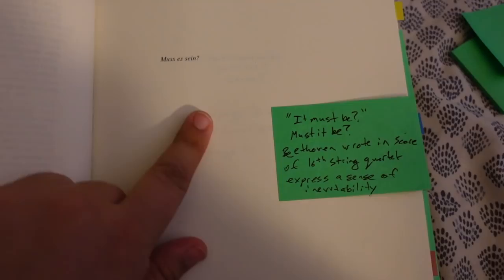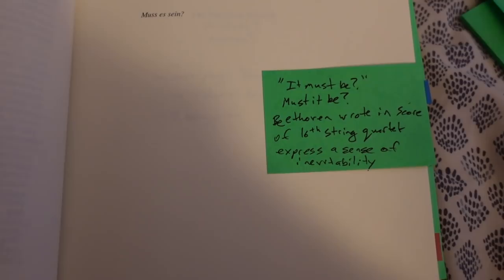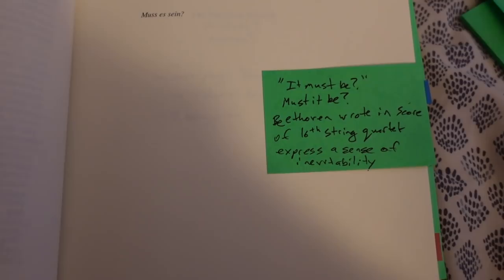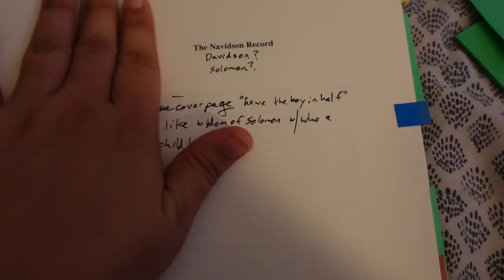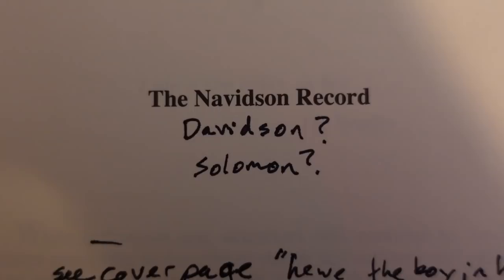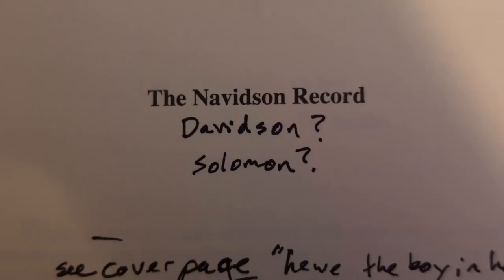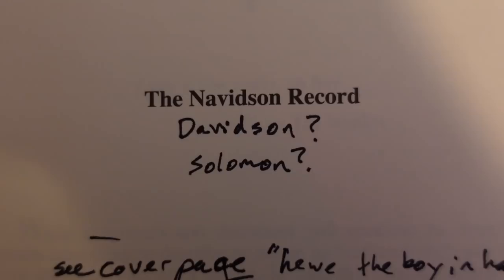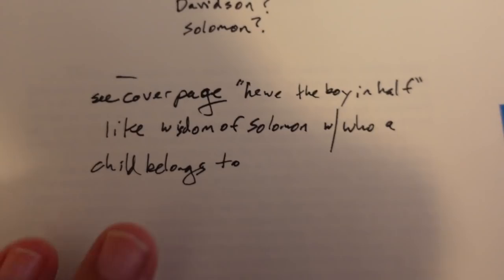There's this phrase I've been googling — technically it's 'it must be,' but it's better translated as 'must it be.' This is something Beethoven wrote in the score notes of his 16th string quartet, meant to express a sense of inevitability: 'Must it be?' I find this interesting. Navidson is the name of the guy who supposedly created the documentary, and this obviously sounds very similar to 'David's son.' And David's son was Solomon. I'm guessing this is intentional because there is a ton of religious biblical imagery in this book.